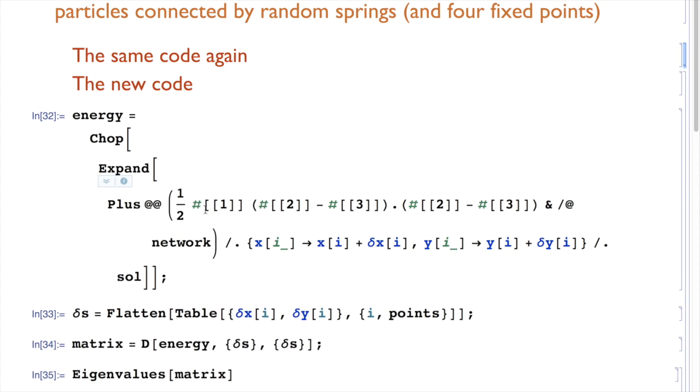I take half times k times the distance dotted into the distance, so that's a distance squared, so that's a half kr squared, and essentially we write it as a function and apply that to every spring in the network.